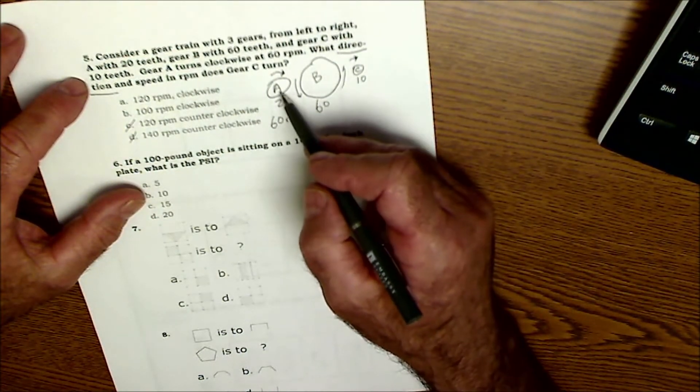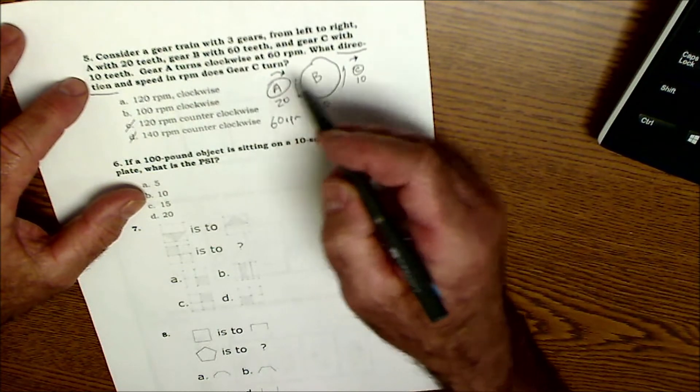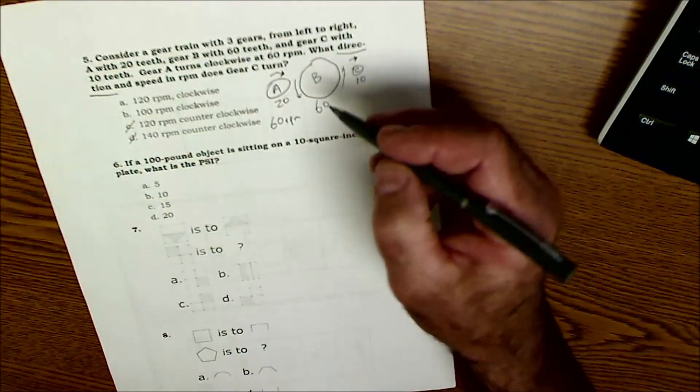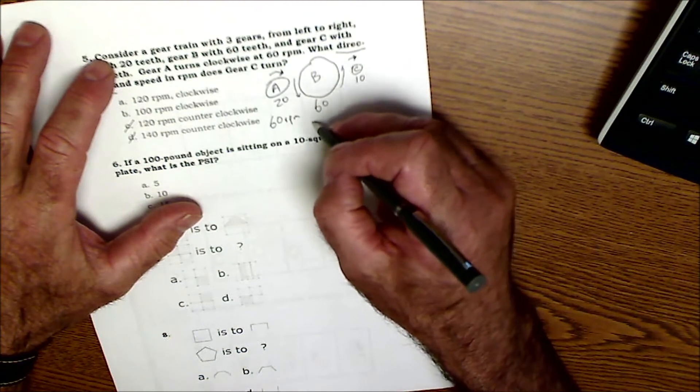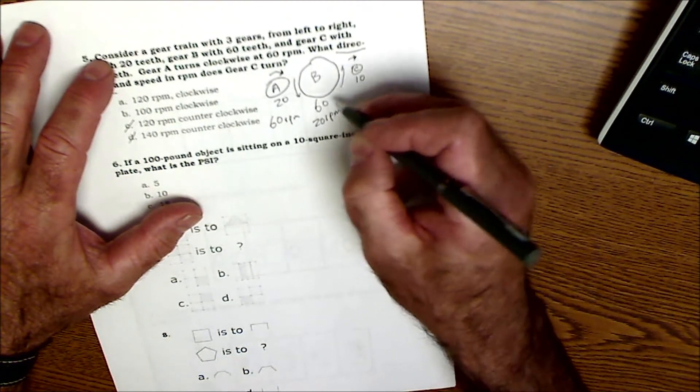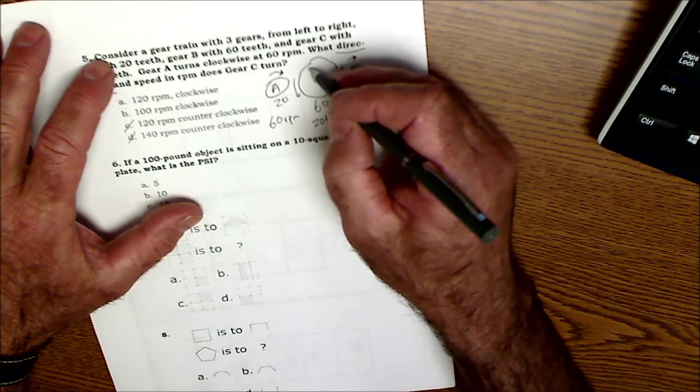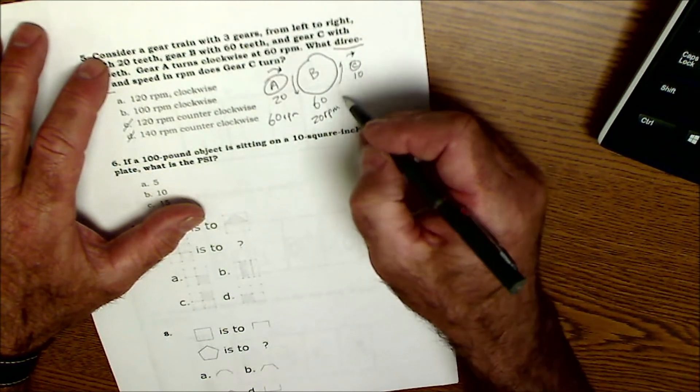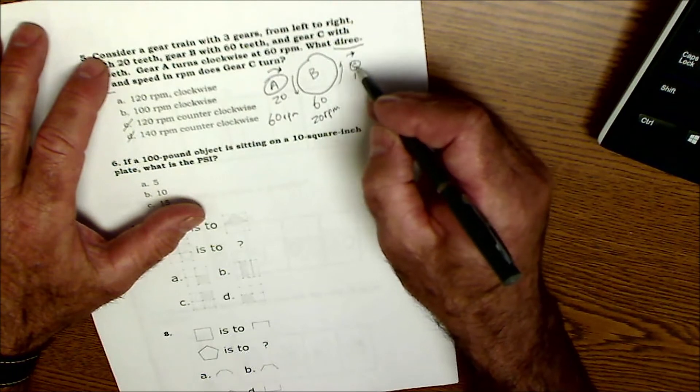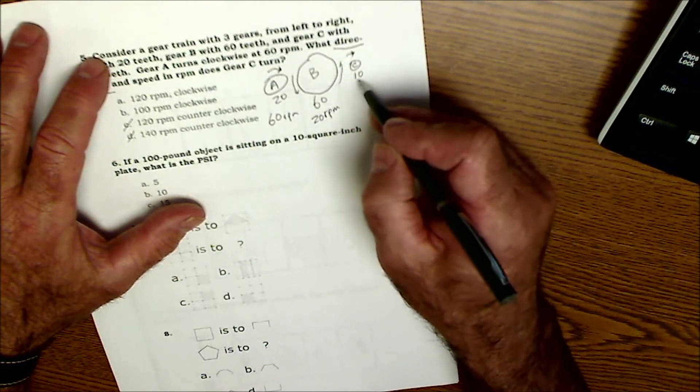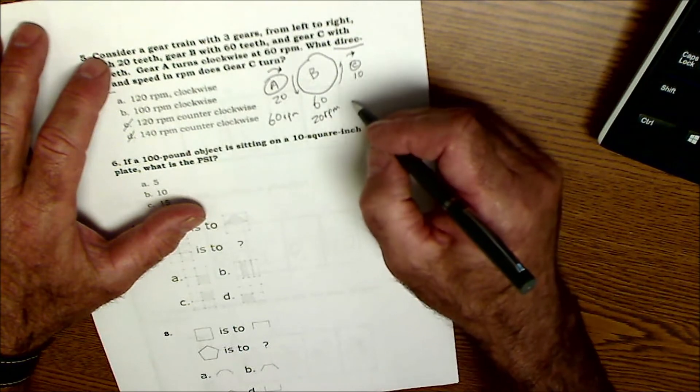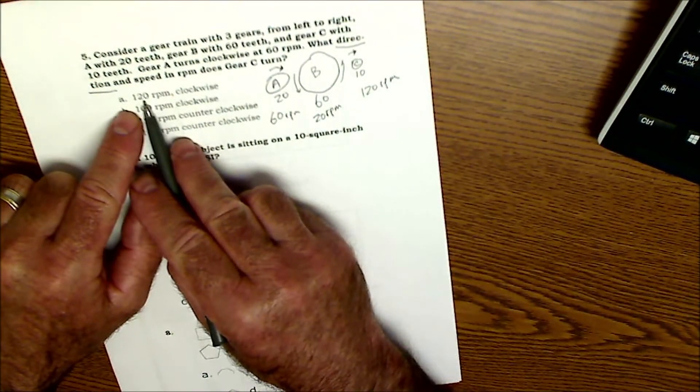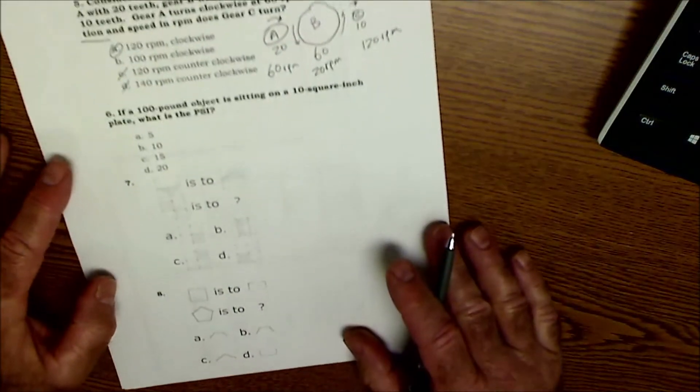So if this is going 60 RPM, 60 revolutions per minute, and this is a 3 to 1 gear ratio, this one right here has to be going a lot slower and a ratio of 1 to 3 slower. So this one will be going 20 RPM. The bigger the gear as a mesh, the slower the RPM. So this is 20 RPM. And then I look at the gear ratio from B to C is 6 to 1. So then this is going to be having to spin 6 times faster to keep up with that because the ratio is 6 to 1. So 6 times 20 is 120 RPM. So then I just have 2 to choose from, 120 RPM going clockwise.